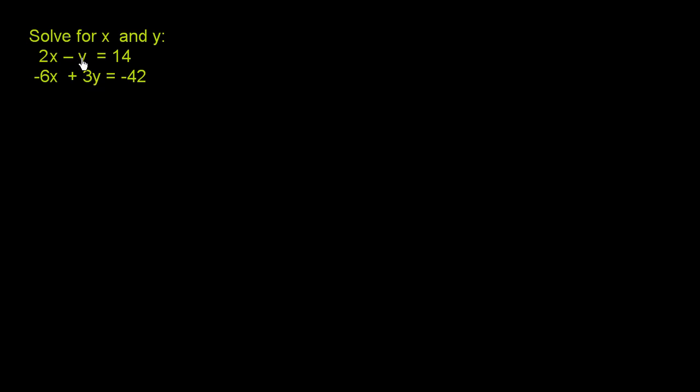And the best way to turn a negative y into a negative 3y is to multiply this entire top equation by 3. So let's do that. Let's multiply this entire top equation by 3. So I'm going to multiply it by 3.